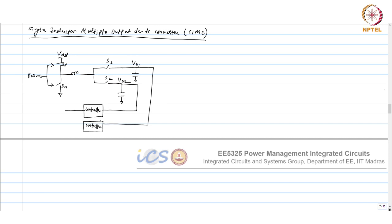The controller contains a compensator and PWM, generating direct PWM outputs. Since there is a single power stage with one inductor, you cannot feed one PWM to both outputs. Some logic is needed to share the inductor between the two outputs.